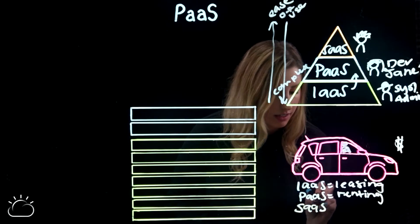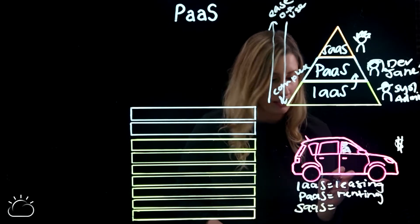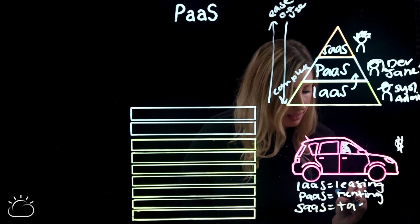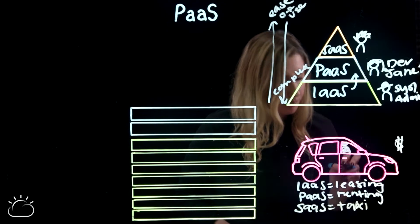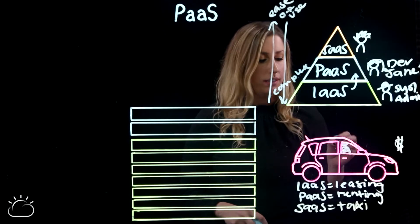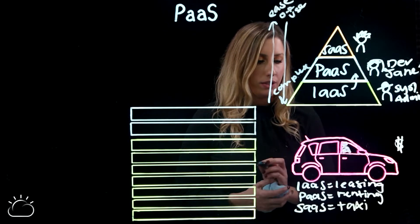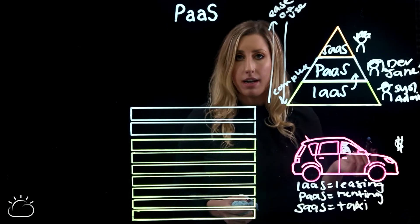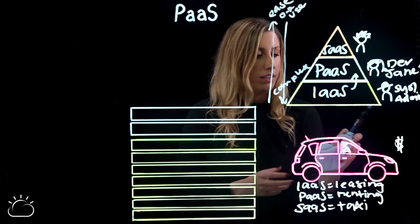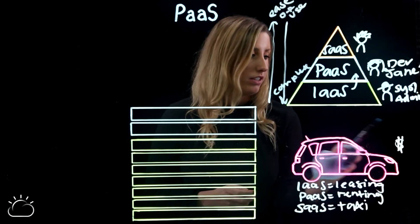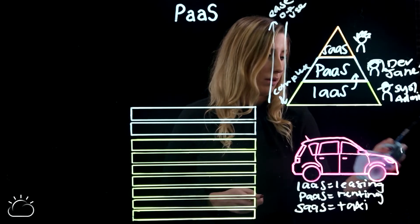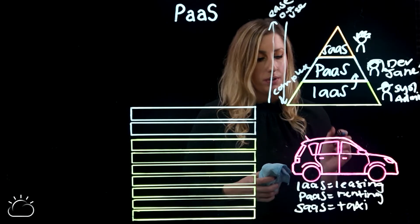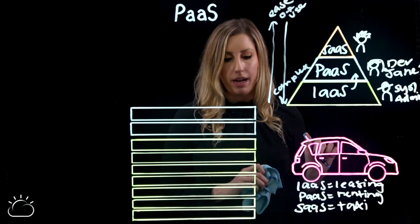Software as a Service is again the easiest one — that one's more like getting a taxi or an Uber. With a taxi or an Uber, you don't care at all about what kind of car it is or what color it is. And in fact, you're not even the one driving or paying for gas or any tolls, because that's baked into the price.